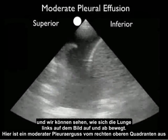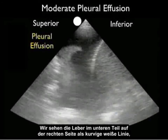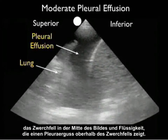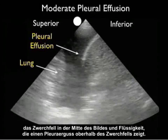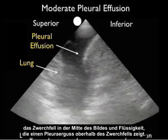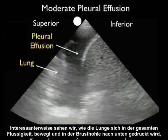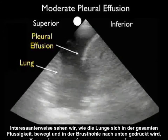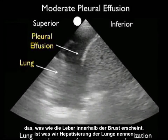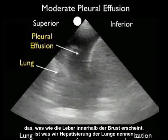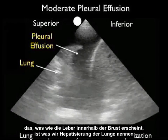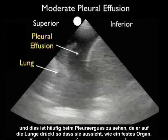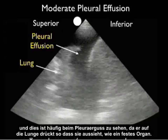Here's a moderate pleural effusion as taken from the right upper quadrant view. We see the liver to the inferior aspect, the curving white line making up the diaphragm in the middle of the image, and fluid representing a pleural effusion superior to the diaphragm. Interestingly, we see the lung moving around in all the fluid, compressed down by the fluid within the chest cavity, taking on what appears like a liver within the chest — something called hepatization of the lung. This is commonly seen with a pleural effusion as it pushes in on the lung, making it more of a solid type organ.